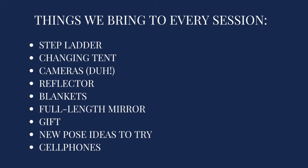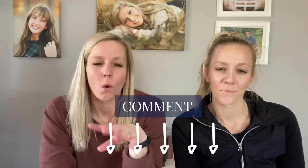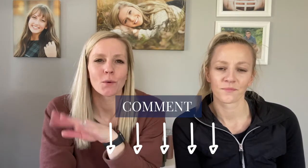We bring a changing tent if the family is going to be changing outfits, our cameras, a reflector, blankets for the family to sit on, and a full-length mirror so mom or the girls can check their hair, makeup, and earrings. We bring a small gift to all of our sessions, and we always try to bring a new pose idea to try. We also bring our cell phones in case we need to contact anyone. Take a chance and comment below — what is one trick you use when working with really young children at a family session?